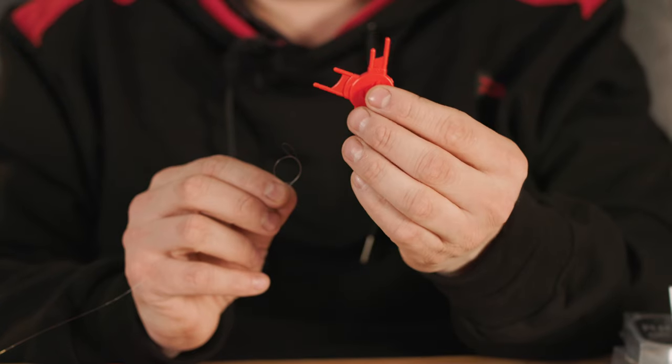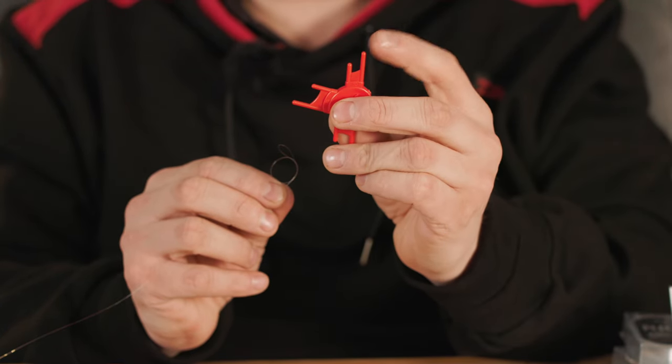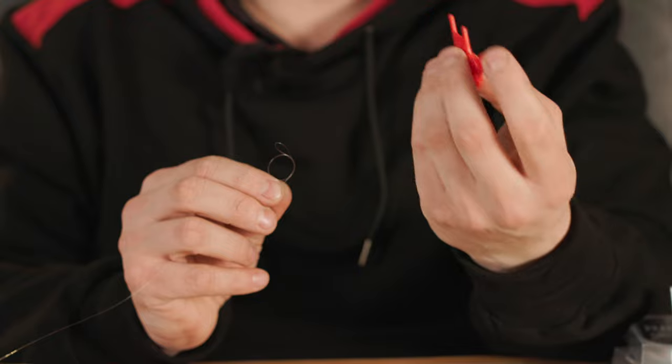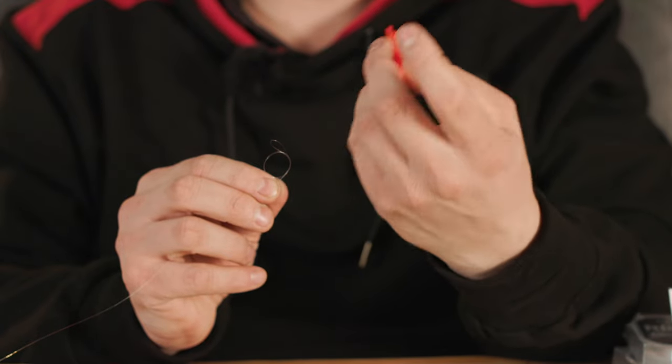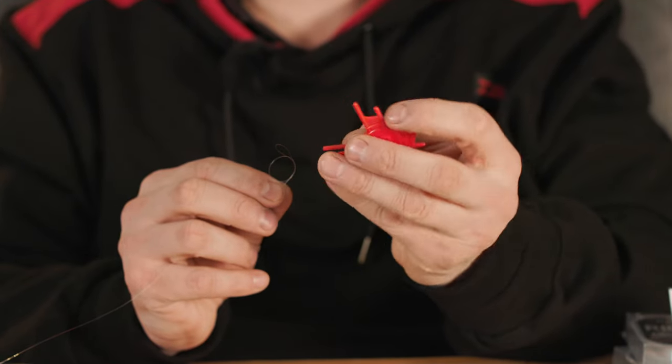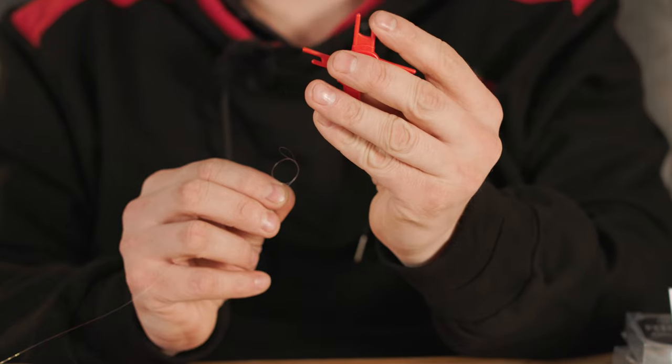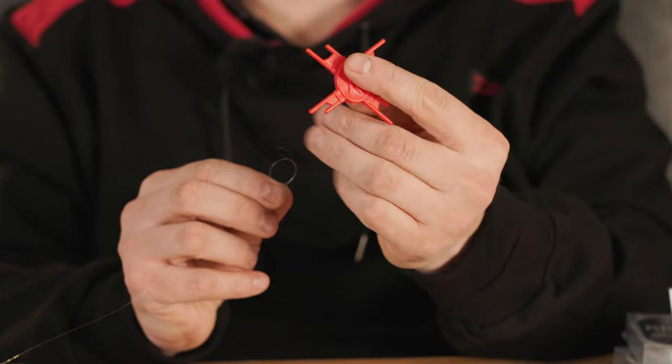Now on the loop sizer, I always go for the smallest one unless I'm using banded hook lengths or with a quick stop on a hair. Then I'll use this size here which is the second biggest, but I always use the smallest one.